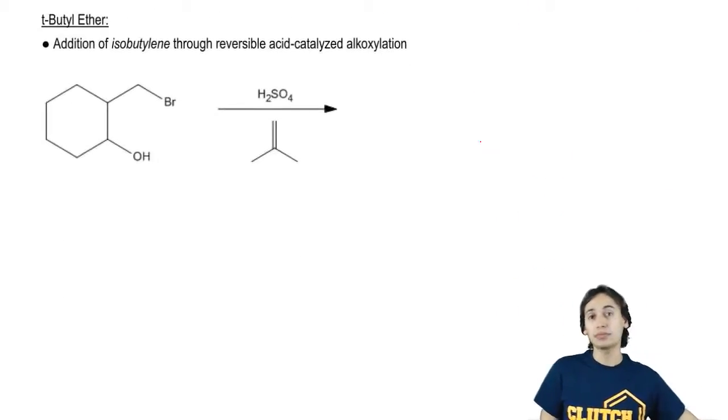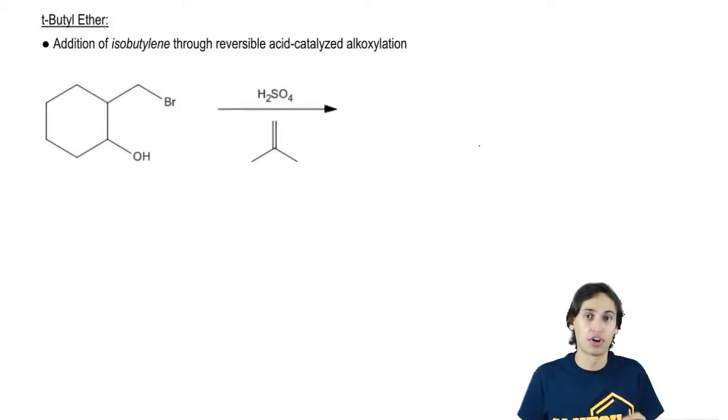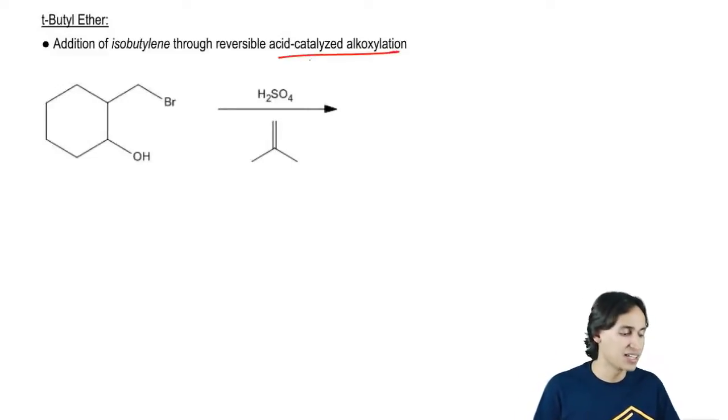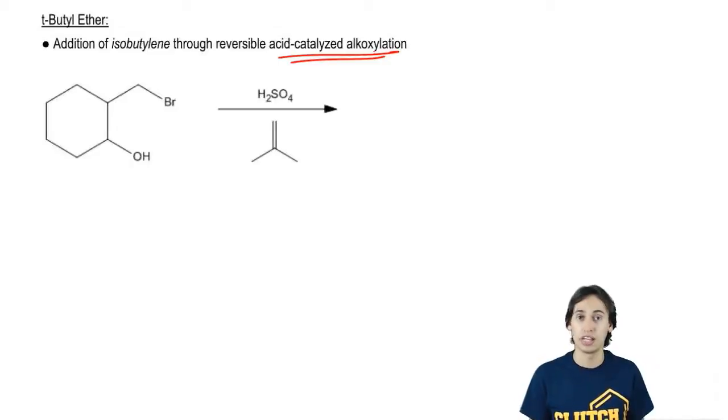Now what this does is it adds an ether to the oxygen making it unreactive. Because if you guys remember, we've learned about functional groups in the past. Alcohols participate in a lot more reactions than ethers do. So what that means is that if I can turn my alcohol into an ether, it's going to be protected as long as it is an ether. Now the reaction that we usually use for this is an acid-catalyzed alkoxylation.